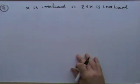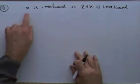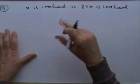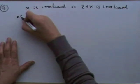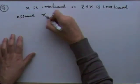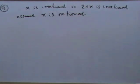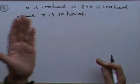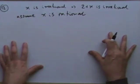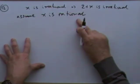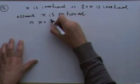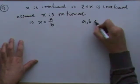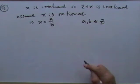Question twelve: proof by contradiction. Prove that if x is irrational, then 2 + x is irrational. By contradiction, assume the contrary: assume 2 + x is rational. It's a clear-cut 50/50 situation — either rational or irrational, no in-between. If 2 + x is rational, it can be written as a/b where a and b are integers.